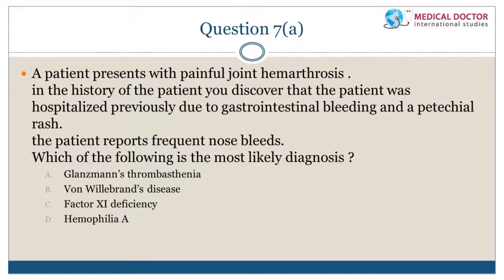Practice question: A bleeding pattern consistent with both coagulopathy and platelet disorder is most consistent with von Willebrand's disease, which affects platelets (causing thrombocytopathy) and the coagulation pathway (by low levels of factor 8).